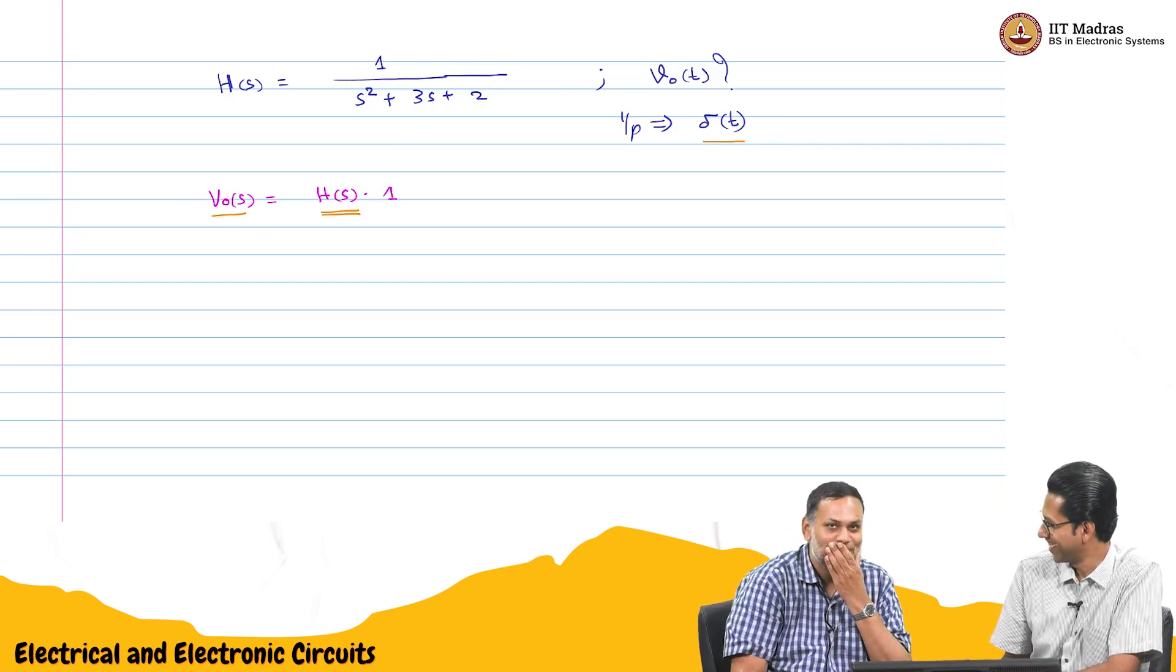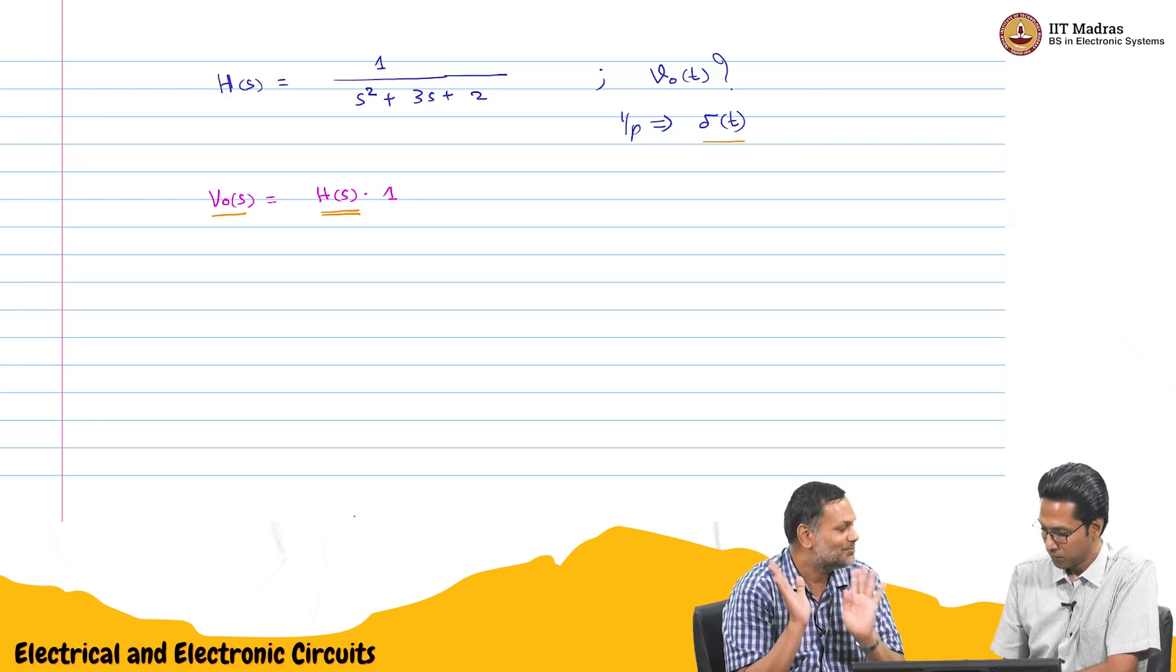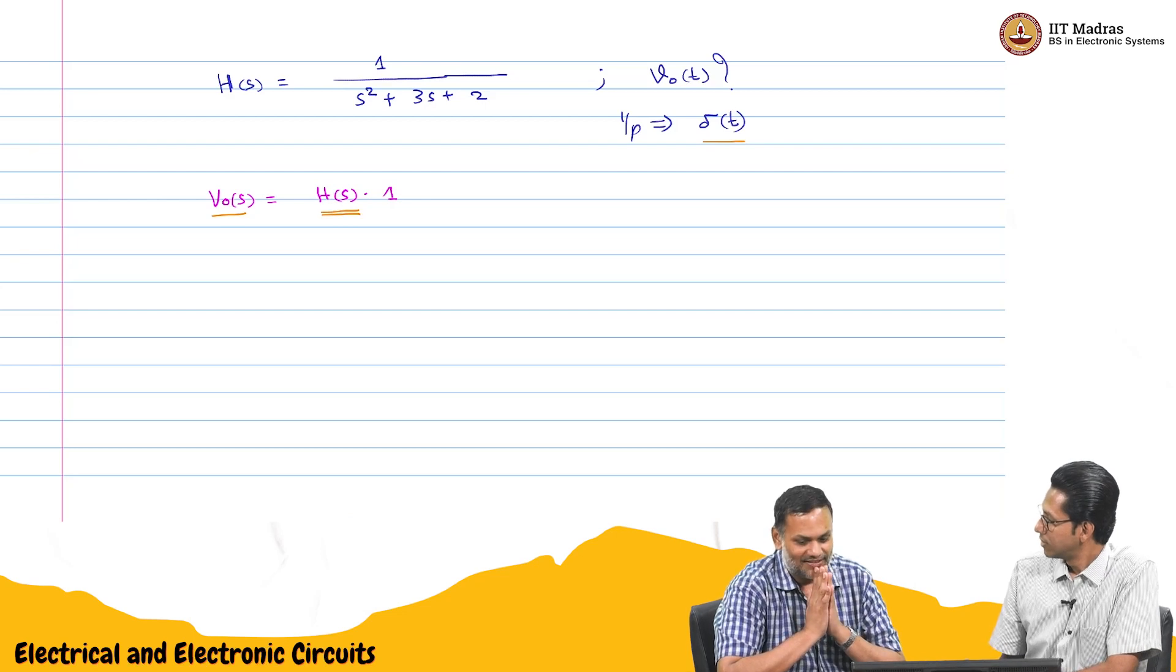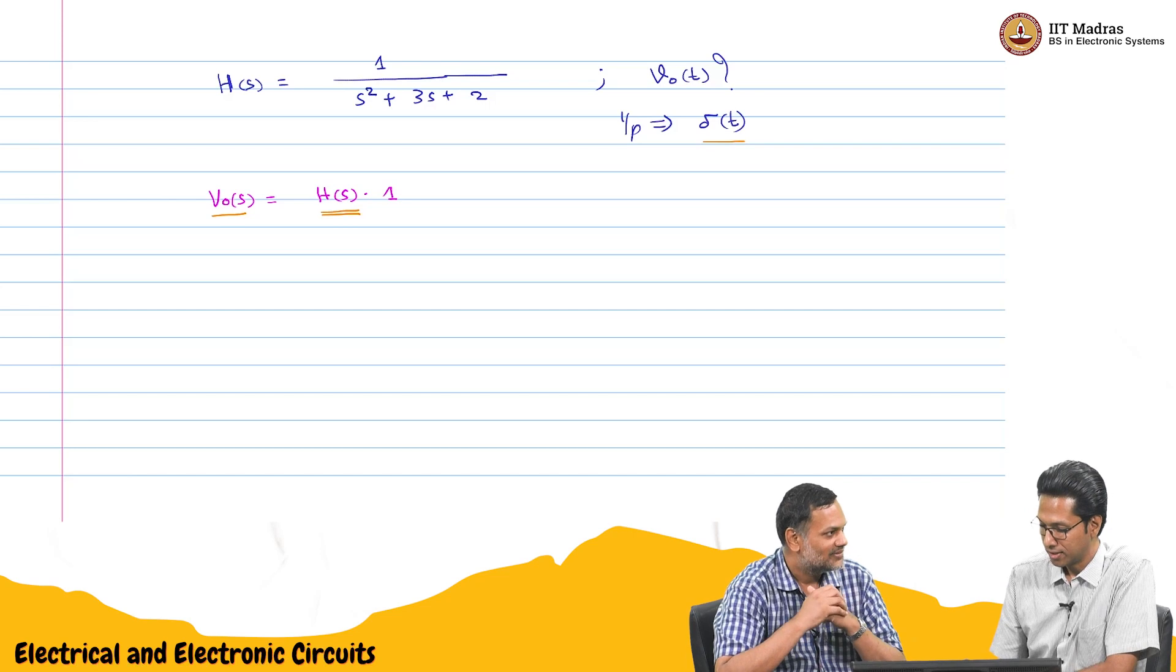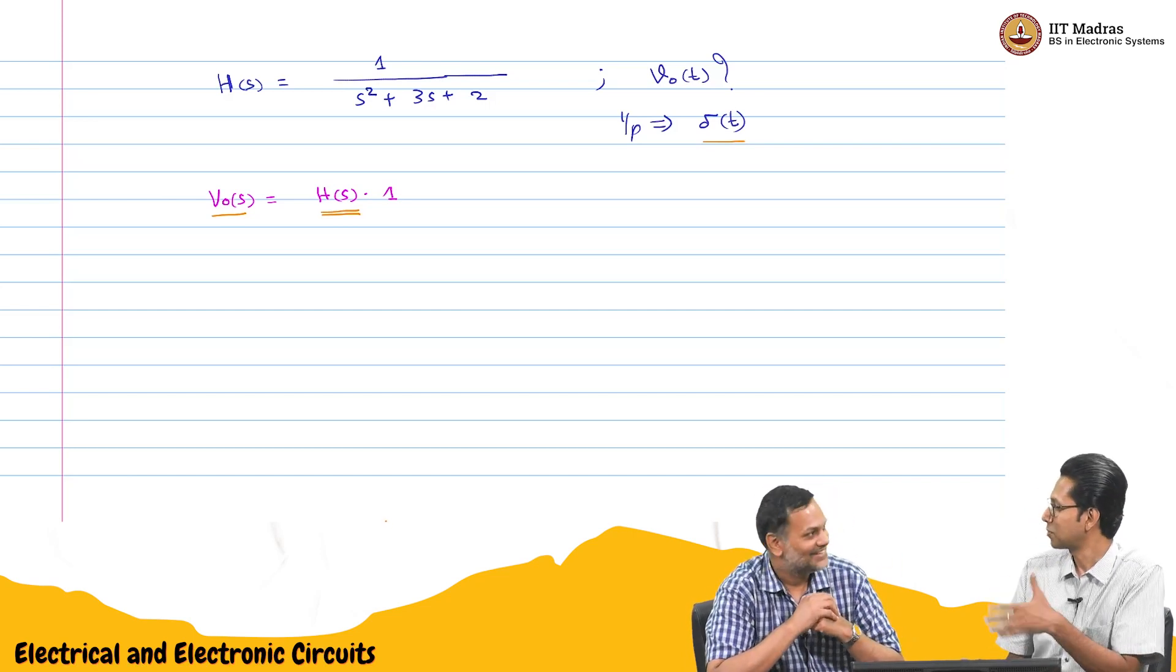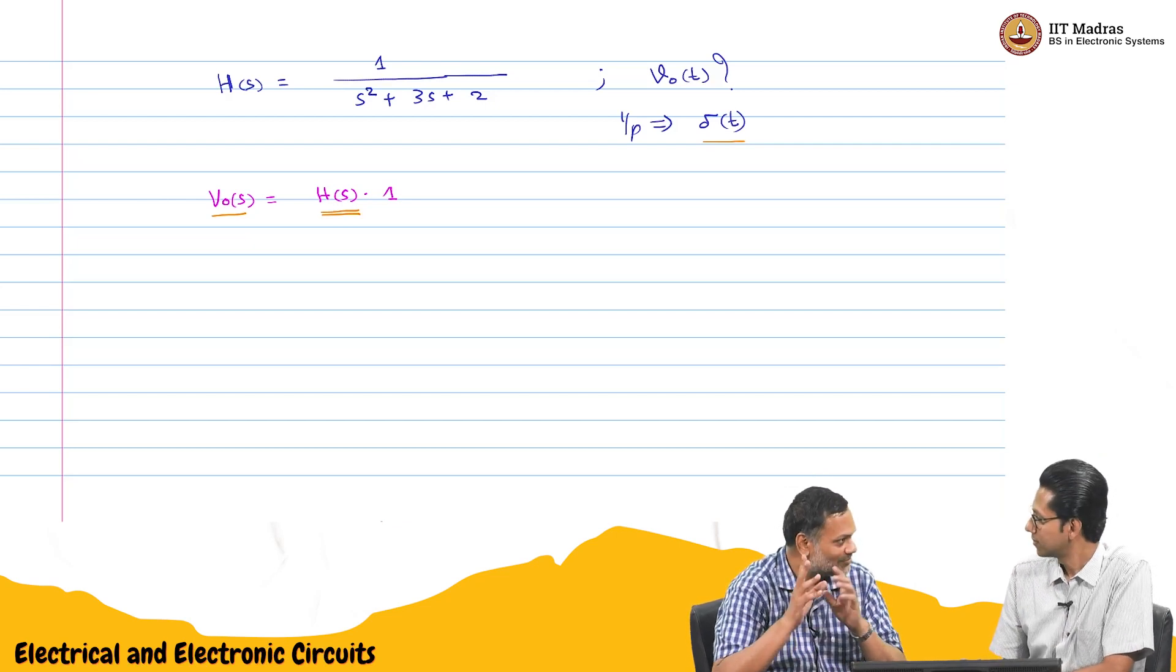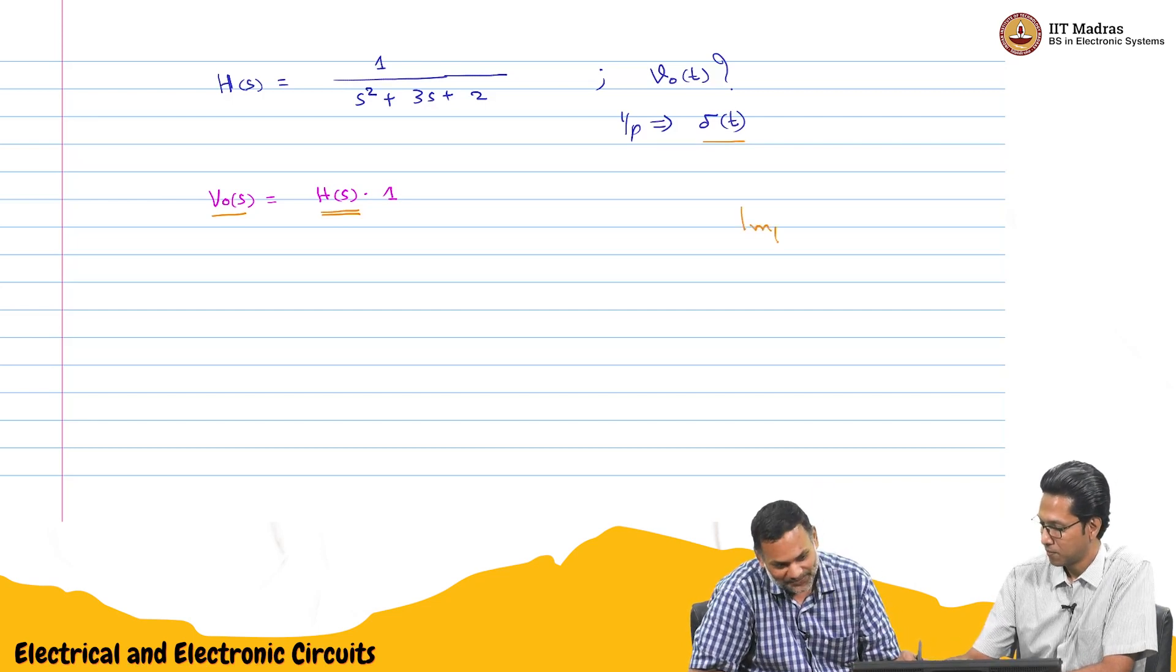Shall we give it a special name? Capital H of s was the transfer function because we are transferring input to output. Now, in this case, we are trying to find out the output for an impulse input. Impulse response is what we should call it. Response corresponding to an impulse. So, small h of t, which is the inverse Laplace transform of H of s, is the impulse response.